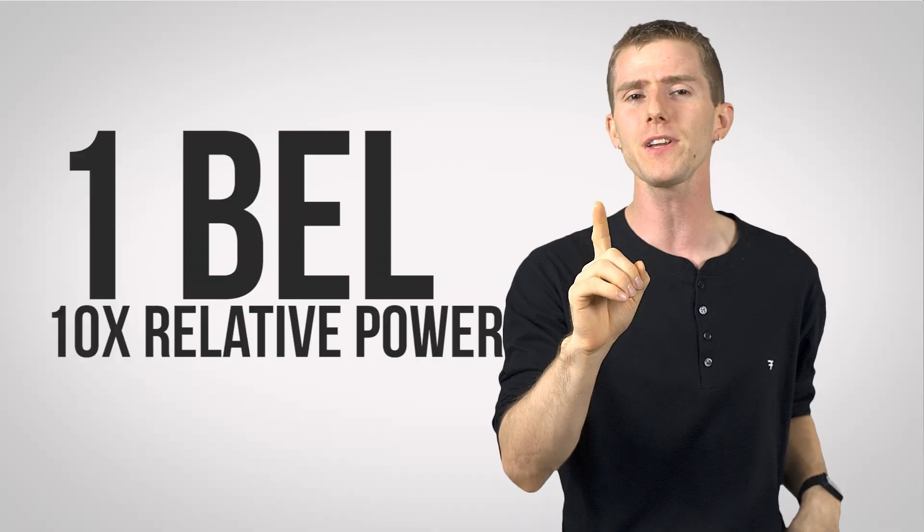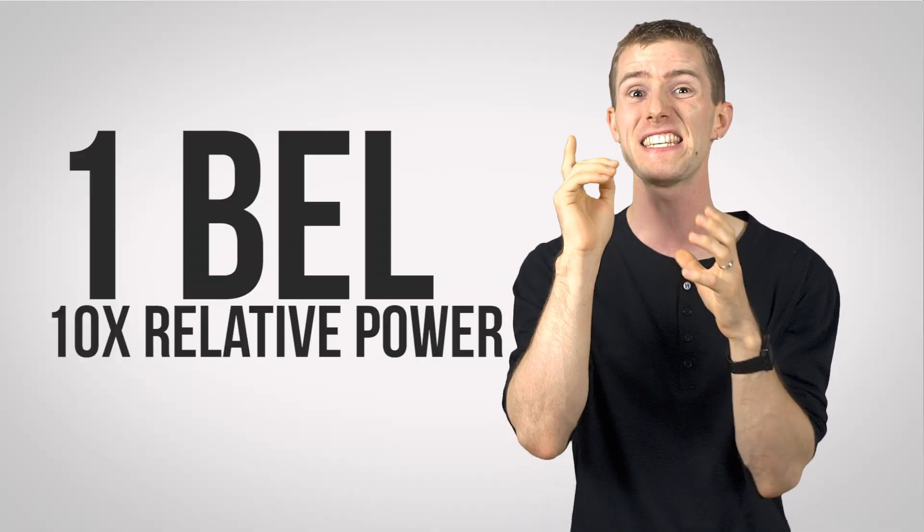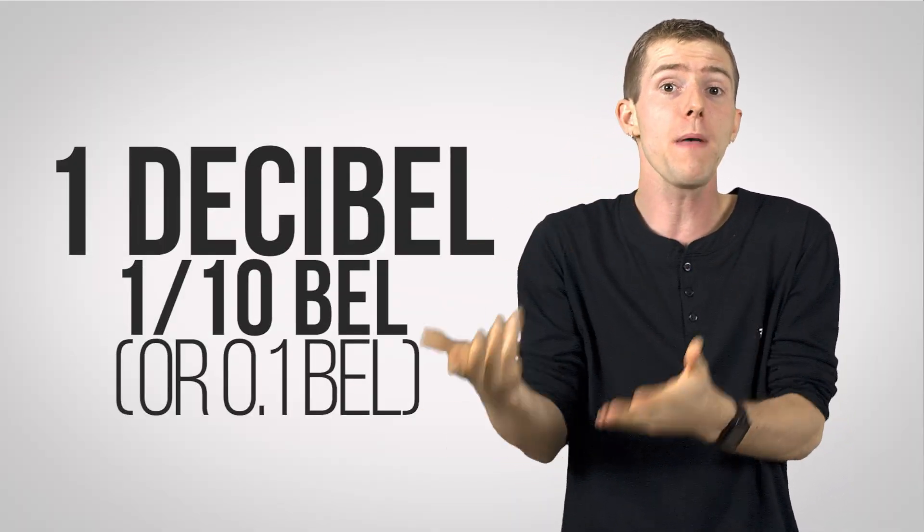Anyway, that's a whole other discussion. Call me, we'll talk about it sometime. The point is, one bell represents a difference in a relative power of 10, with a decibel being one-tenth of a bell.